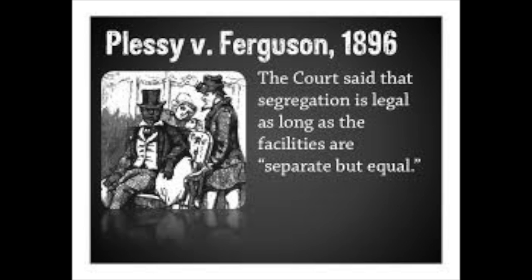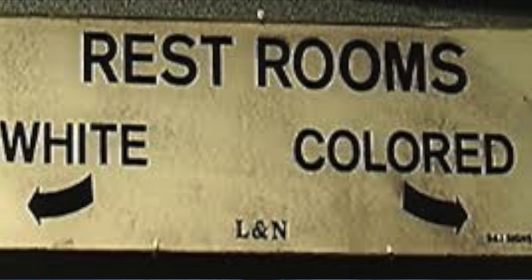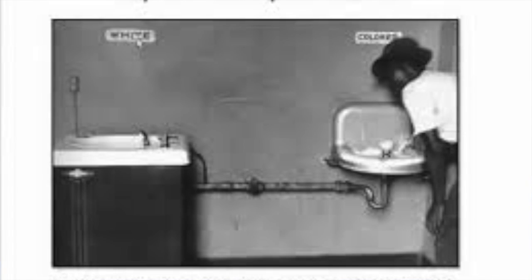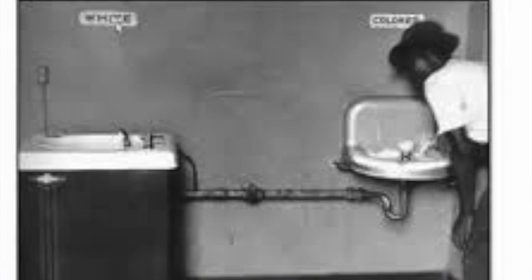In 1896, the lawsuit Plessy v. Ferguson challenged Jim Crow laws. The Supreme Court responded by creating the 'separate but equal' doctrine, ruling that separate facilities — colored bathrooms and white bathrooms, colored water fountains and white water fountains — were acceptable as long as both groups had them. This was obviously deemed illegal much later, but it created more and more problems. Eventually, as more African Americans moved from the South into northern inner cities, it created what's called white flight.